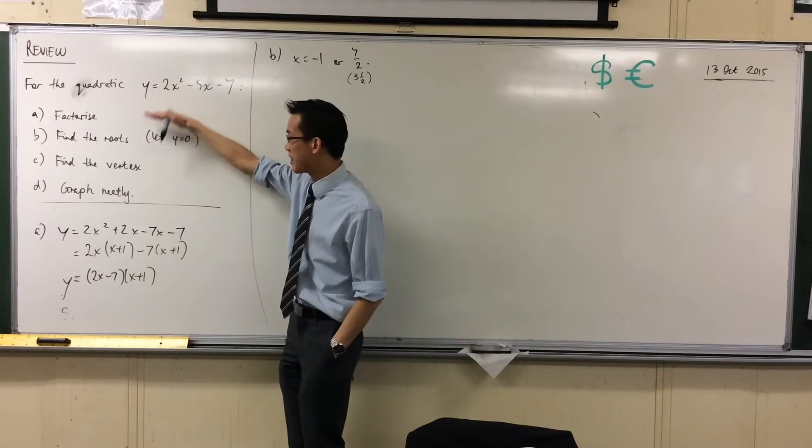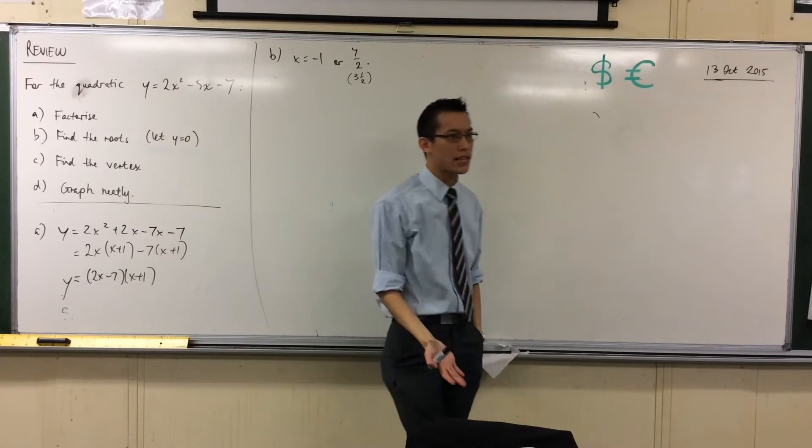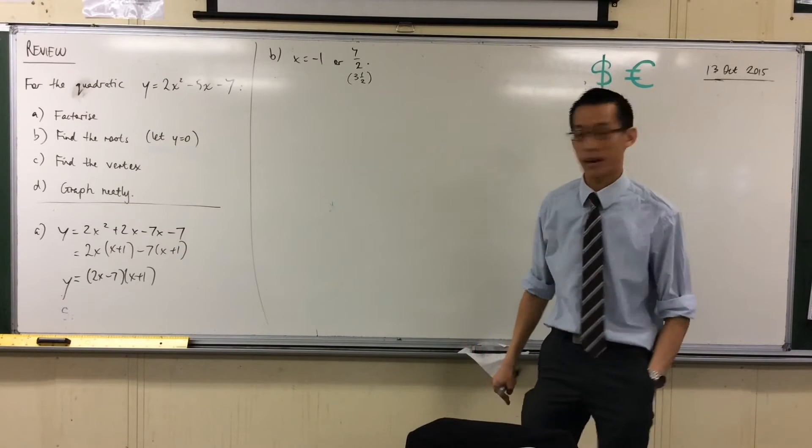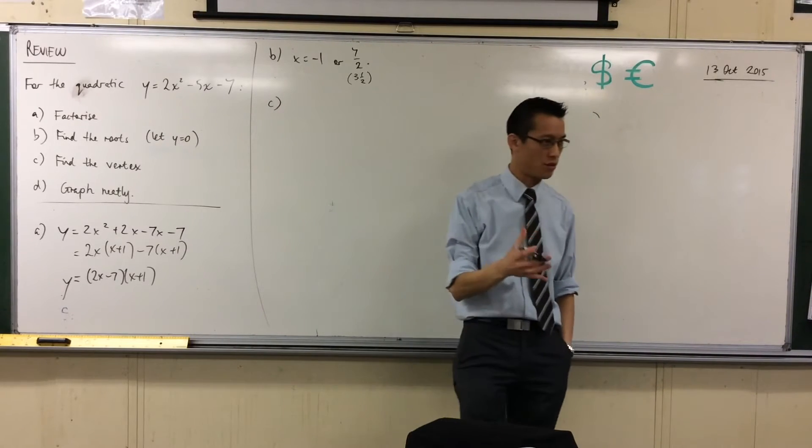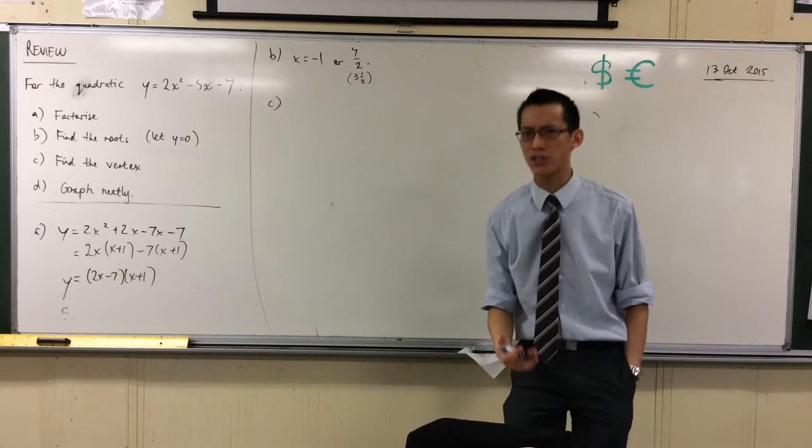Alright, that was A, there was B. To find the vertex, I have some choices here. There are two things I can do before I do them. What is the vertex again? What are we actually trying to find?